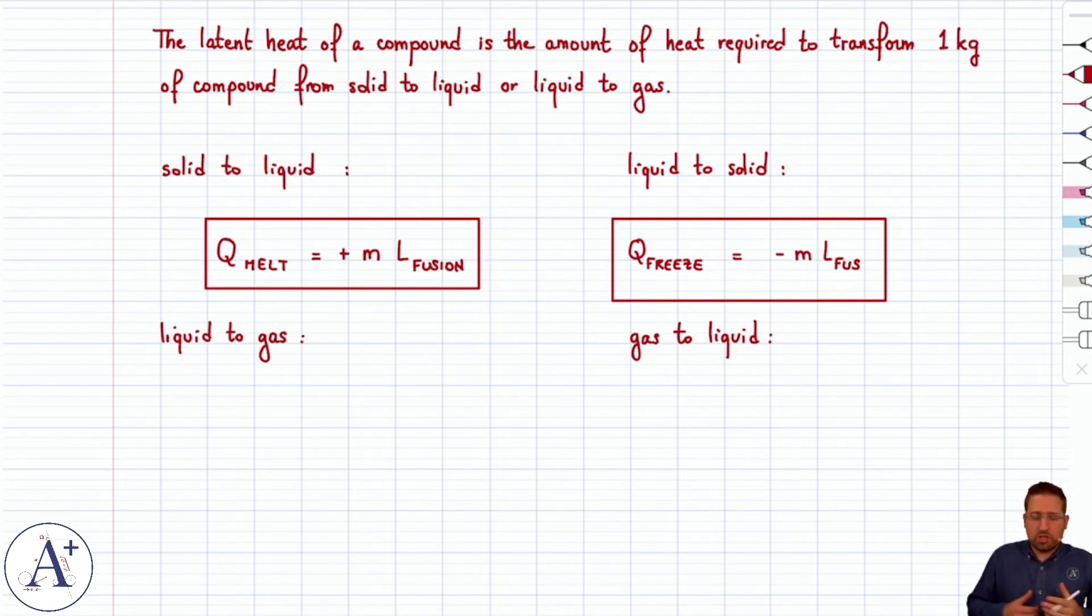Similarly, the same reasoning holds for liquid to gas or gas to liquid. So Q for liquid to gas, then it's going to be Q vaporization is equal to plus, because you need to supply heat,